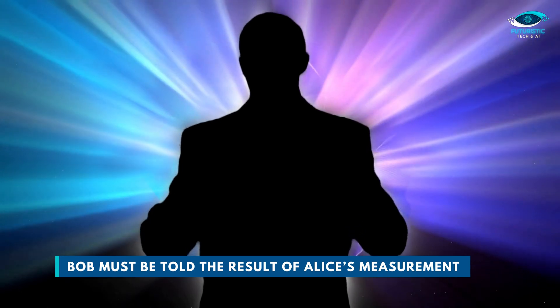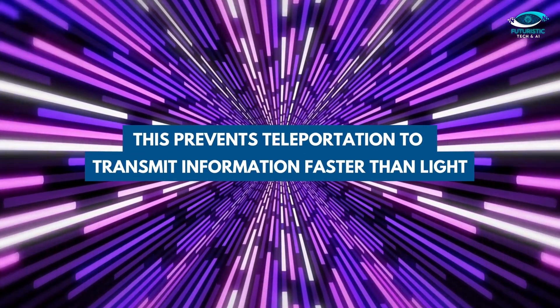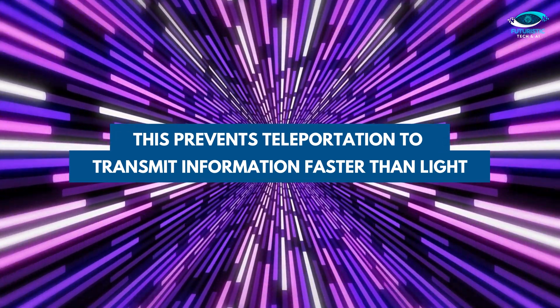Of course, to know which state it's in, Bob must be told the result of Alice's measurement. We'll show later that this is in fact which prevents teleportation from being used to transmit information faster than light.